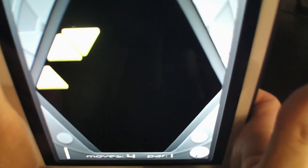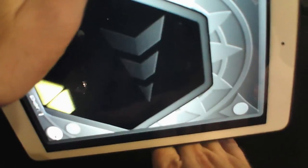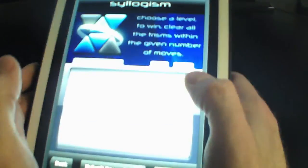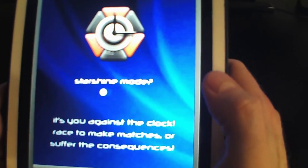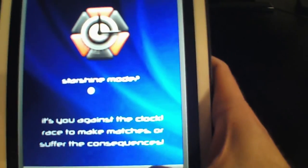I don't know, it's too hard to do with the camera. It's interesting that they have a whole different style of play, I'll give you that. There's one other thing called Terminism. This is Starshine Mode - it's you against the clock. Race to make matches or suffer the consequence. Oh good, just what we need is time pressure. It's like I wasn't bad enough at this game already, let's add a clock. Let me center this for you guys.